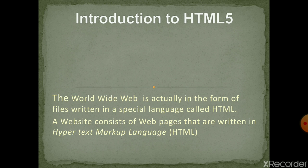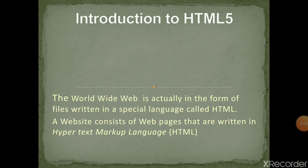What is the World Wide Web? I think everyone knows, but still I am going to give an idea. Generally, the World Wide Web — commonly known as the web — is an information system where documents and other web resources are identified by URL. URL means Uniform Resource Locators, which may be interlinked by hypertext and are accessible over the internet.